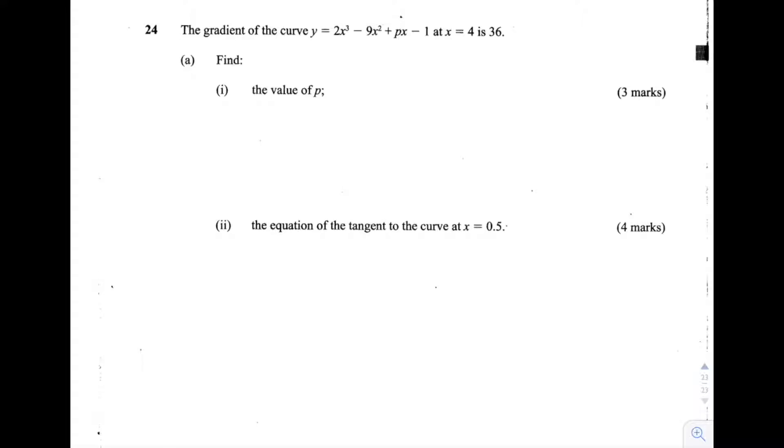Part a is made up of two further parts. Part 1 of part a says find the value of p. And part 2 of part a says the equation of the tangent to the curve at x is equal to 0.5. So we have to find the equation of the tangent in part 2, and in part 1 we have to find the value of p.